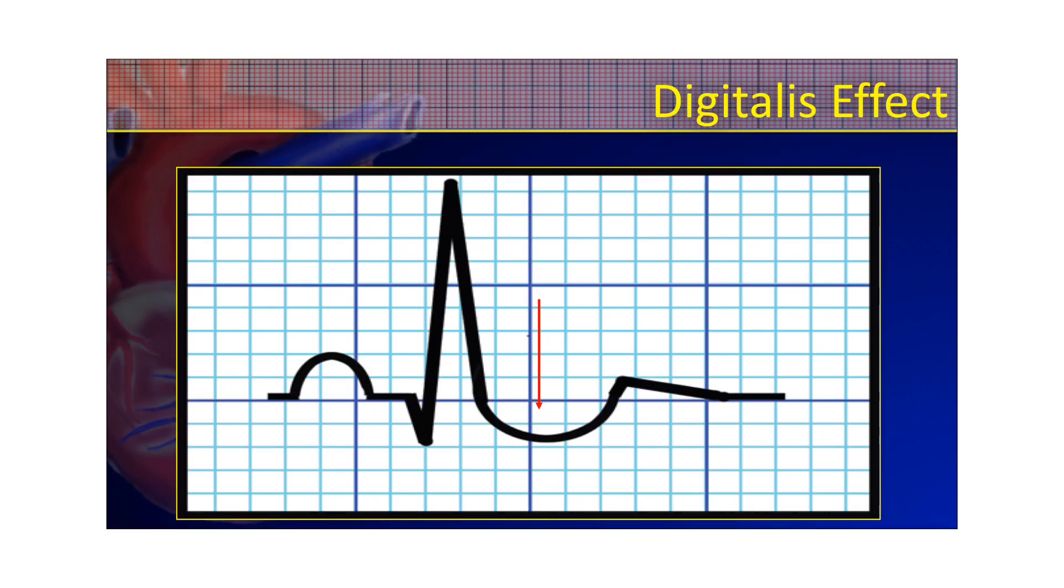I'll briefly explain the digitalis effect. I'm not going to spend a lot of time on this, because digitalis really isn't that prevalent of a medication as it used to be. But all it really is, is a scooped out appearance in that ST segment. That you can see here, that arrow is pointing to it. So this scooped out appearance, that can cause a little bit of ST depression. It's what they call the digitalis effect. It looks like somebody took an ice cream scooper and just scooped out that ST segment.